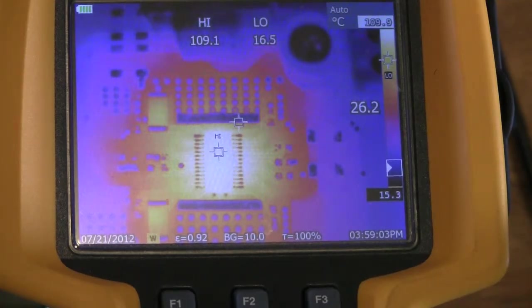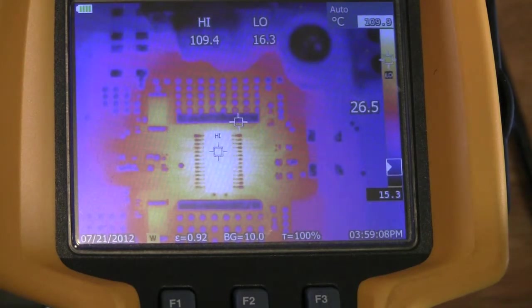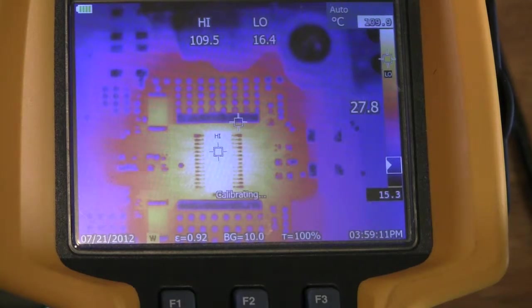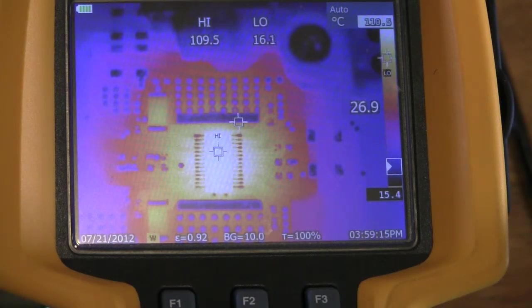Alright, we're at 3 amps. DRV8818 is supplying 3 amps to my NEMA 23 stepper motor, and I basically see 110 degrees. That is actually 110 degrees Celsius, so I can boil water right on top of that chip.